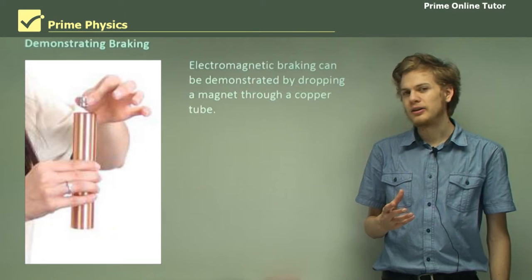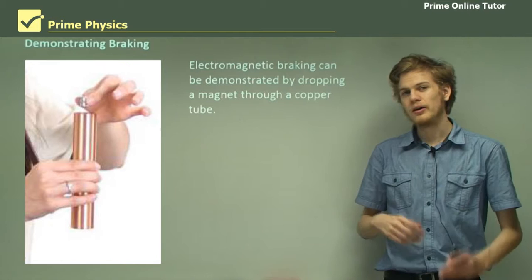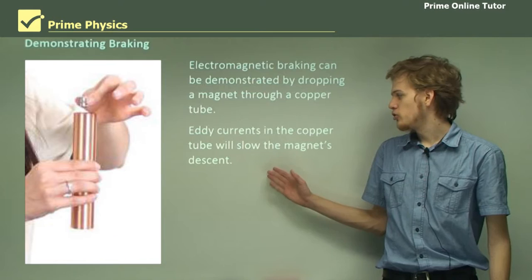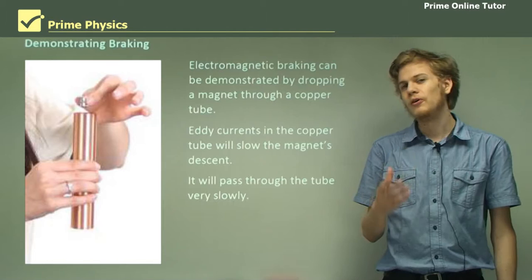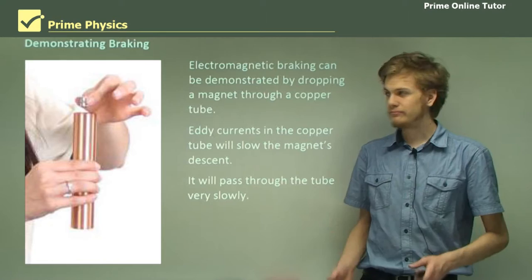We can demonstrate electromagnetic braking pretty easily. All we need to do is drop a magnet through a copper tube or a tube of any other conductive metal. Eddy currents in the copper tube will slow down the magnet's descent, because they create magnetic fields that oppose the magnet's motion. This means that the magnet will pass through the tube very slowly, far more slowly than if there were no eddy currents.